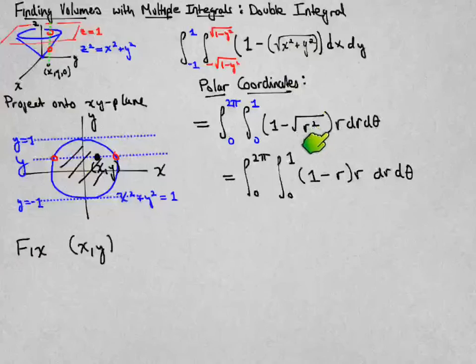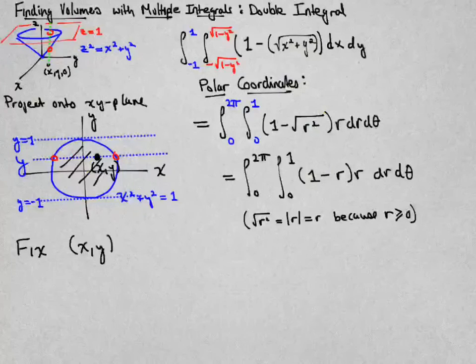The square root of r squared is equal to r, don't take that for granted. There is a little convincing that needs to be done. In principle, the square root of a square is the absolute value of that expression, but because I'm integrating r between 0 and 1, it's a non-negative value.